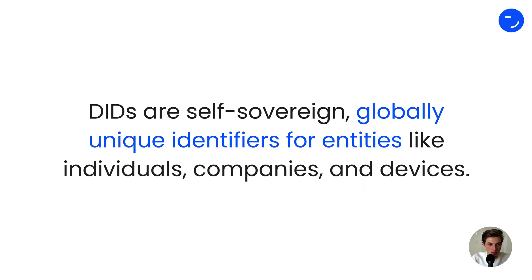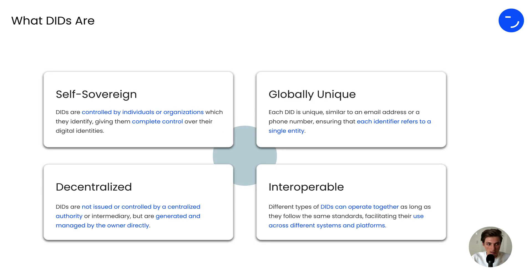What are DIDs? DIDs are self-sovereign, globally unique identifiers for entities like individuals, companies, and devices. They are self-sovereign, so they are controlled by the individual or an organization, and no third party.